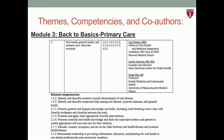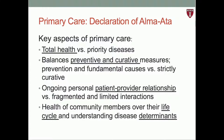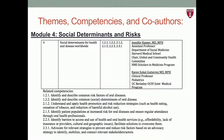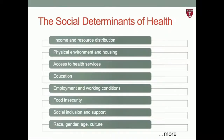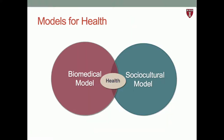Module three is titled Back to Basics Primary Care, co-authored with Doctors Lisa Simon, Carlos Ferron, and Hugh Silk. It covers the relationship between oral health and general health, revisits the Alma-Ata, discusses the role of primary care in today's globalizing world, and introduces concepts of universal health coverage. Module four is entitled Social Determinants and Risks, co-authored with Doctors Jennifer Kasper and Karen Sokol Gutierrez, covering social determinants for health and disease worldwide, vulnerable populations, the concept of the bottom billion, and sociocultural and biomedical models of health and disease.